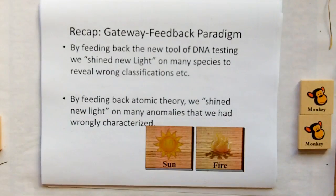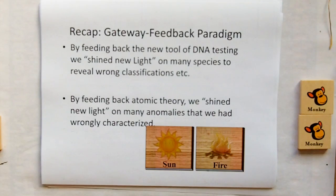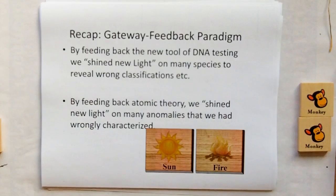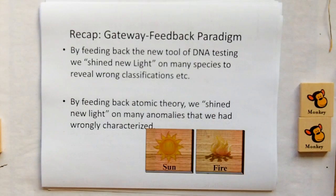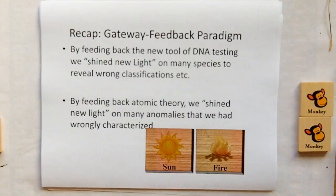A long time ago we thought rainbow trout was a trout because these are both freshwater fish. It wasn't until DNA testing shined new light that we learned that rainbow trout is actually salmon — probably salmon that got cut off from being able to return to the sea and changed itself to live its life completely in freshwater. From the previous video, we learned of the gateway feedback paradigm: by feeding back the new tool of DNA testing, we shine new light on many species to reveal wrong classifications.